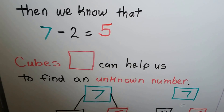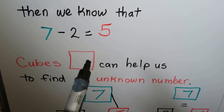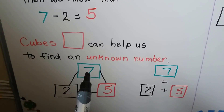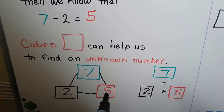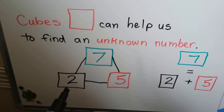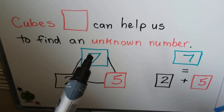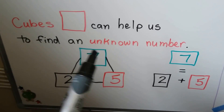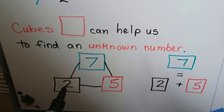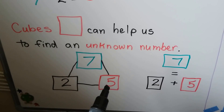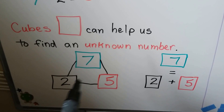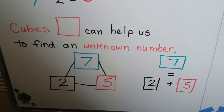Cubes can help us to find an unknown number. We'll use these square cubes and write the unknown number in them. 7, 2, and 5 are in a fact family. The way we use the cubes is we put the big number up here — that's the minuend. We put the subtrahend here and we'll find the difference.